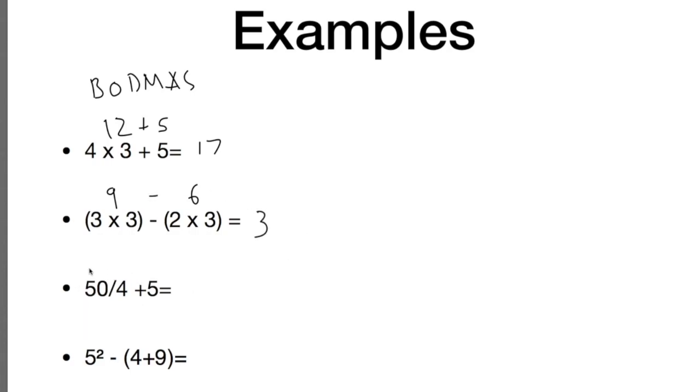Okay, on this example this is 50 divided by 4 plus 5. So if we follow along on BODMAS we see that division comes before addition so we'll need to do that division first. 50 divided by 4, so 50 divided by 2 is 25, so if you divide by 4 it would be 12.5 plus 5 is 17.5.